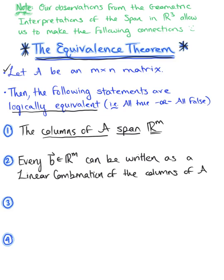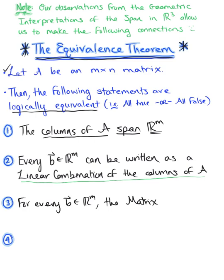If every vector B in Rᵐ can be written as a linear combination of the columns of matrix A, then for every vector B in Rᵐ, the matrix equation — matrix A times vector x equals vector B — has a solution.